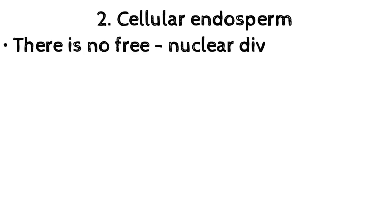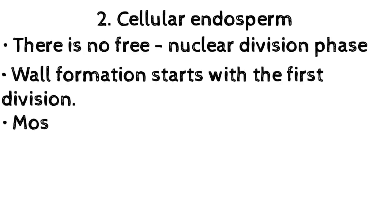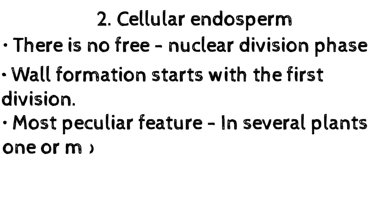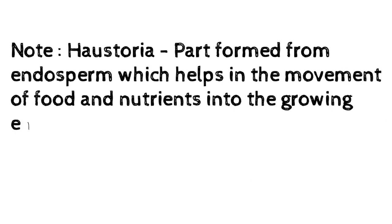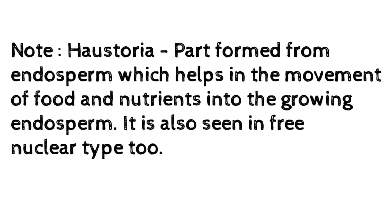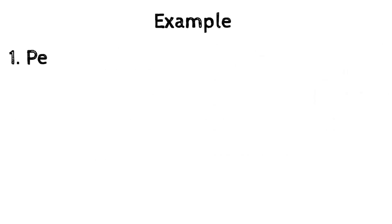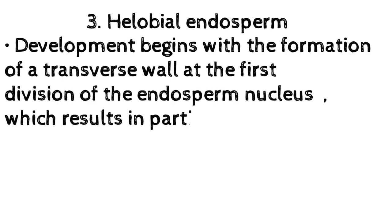Second: Cellular endosperm — there is no free nuclear division phase; wall formation starts with the first division. A most peculiar feature is that in several plants, one or more cells become highly specialized and perform haustorial function. Note: haustoria are parts formed from endosperm which help in the movement of food and nutrients into the growing endosperm. Haustoria are also seen in the free nuclear and helobial types. Examples of cellular endosperm: Petunia and Datura.